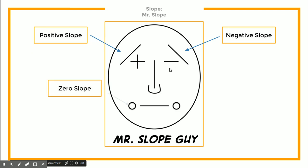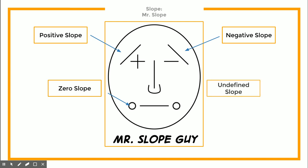A zero slope is represented by the zeros in Mr. Slope's eyes, and that means it is a horizontal line. It doesn't go up or down at all — it's simply a straight horizontal line, which means it has no slope. An undefined slope is a vertical line, represented by the 'U' in Mr. Slope's nose. It's not positive, negative, or zero — it's just undefined.